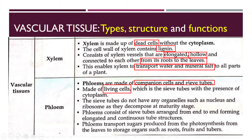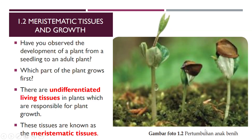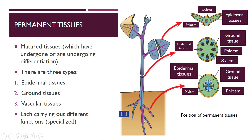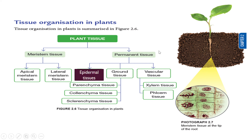Phloem, companion cells, and sieve tubes — nama-nama ini kamu kena pastikan kamu tahu this is related to phloem. They are made up of living cells with cytoplasm. Tapi tiada organelles such as nucleus and ribosomes, because they will decompose when they mature. Sieve tubes arranged end to end — elongated, continuous tube structures. Sebab mereka pun perlu mengangkut — mengangkut apa? Hasil-hasil photosynthesis. Dari mana ke mana? Dari daun to other parts of the plants, to storage organs — for example roots, fruits, tubers. This is only the first part, where you have covered the permanent tissue. Kita ada bincang tiga tisu ini.